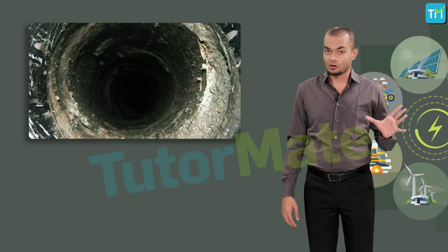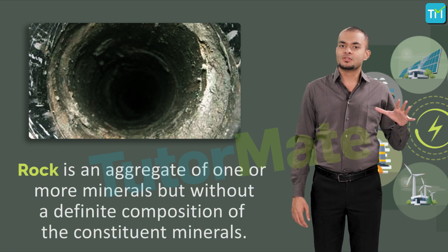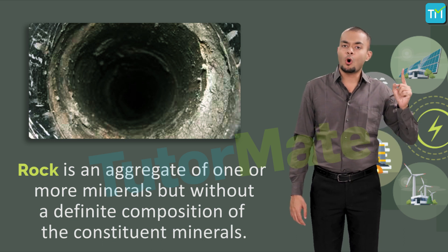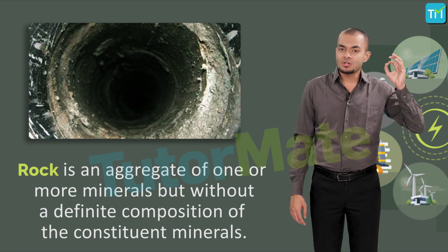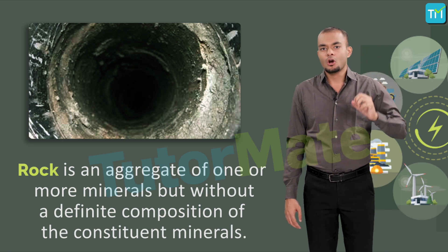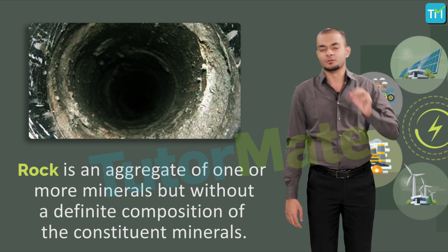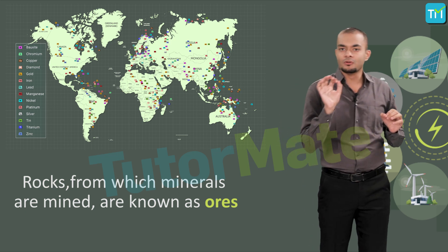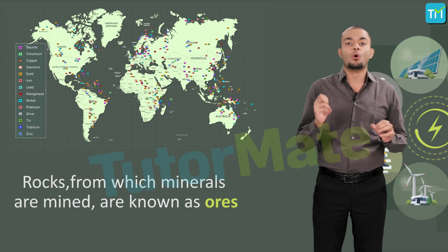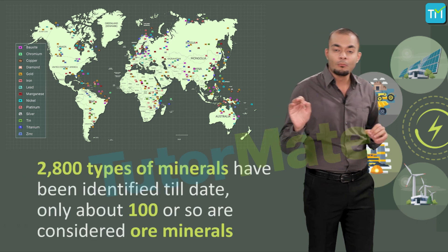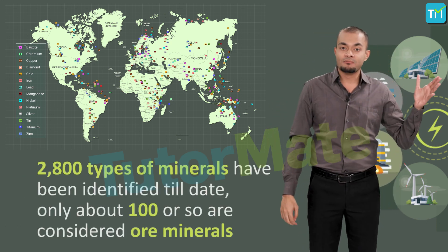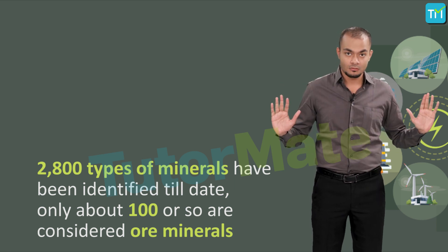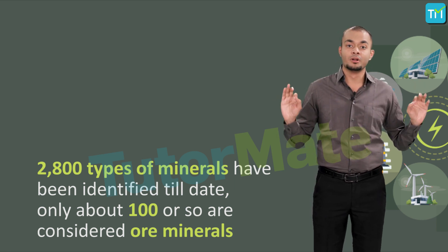If the earth's surface is drilled, it will break into rocks. A rock is an aggregate of one or more minerals without a definite composition of the constituent minerals. These rocks from which minerals are mined are known as ores. Although more than 2,800 types of minerals have been identified to date, only about a hundred are considered ore minerals.